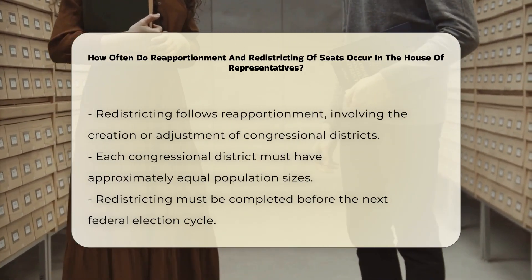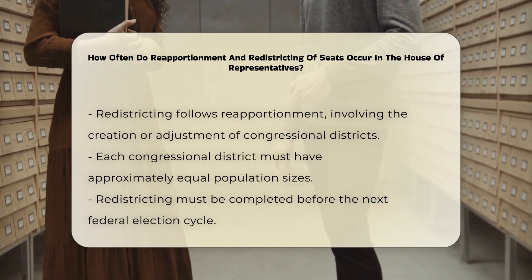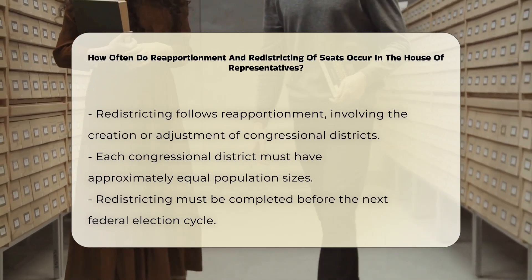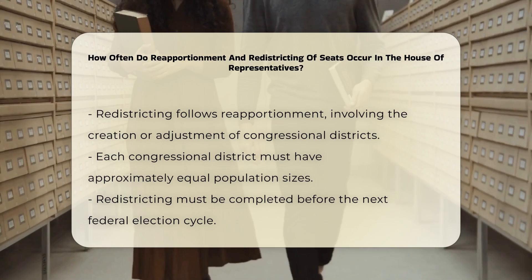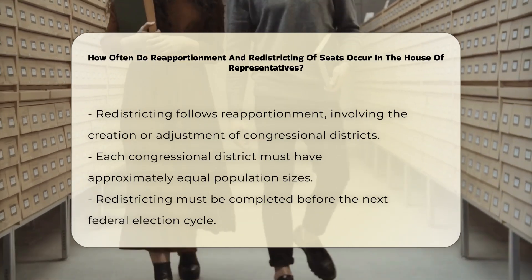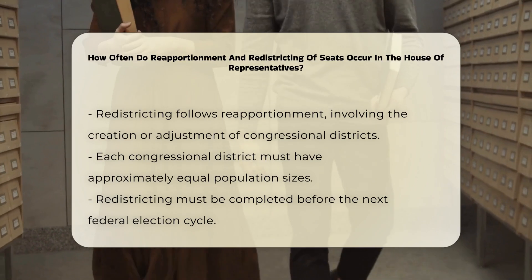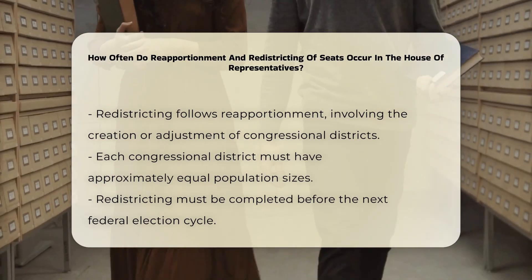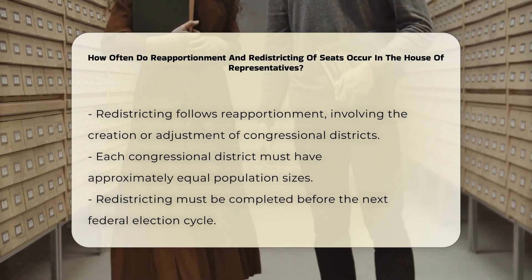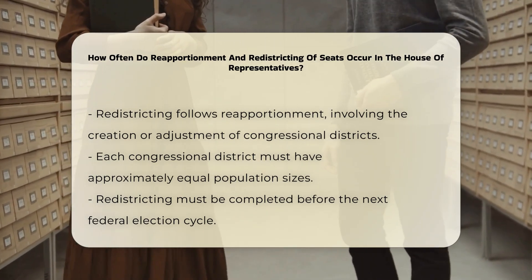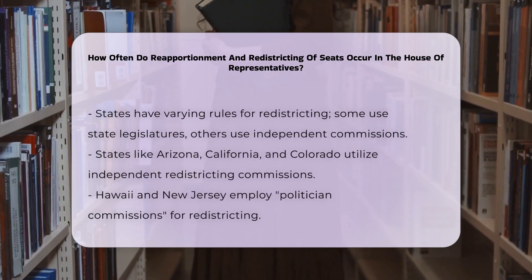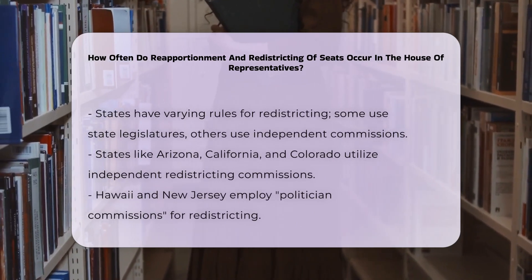After reapportionment, the next step is redistricting. Redistricting is the process where states create new congressional districts or redraw existing district boundaries to adjust for population changes and to ensure that each district has approximately the same population. This process must be completed before the next federal election cycle, typically by the filing deadlines for the upcoming elections. The rules for redistricting vary from state to state.